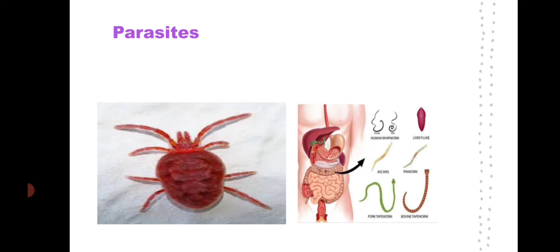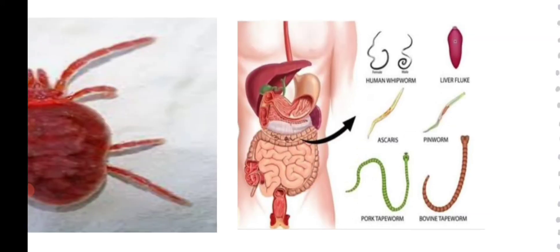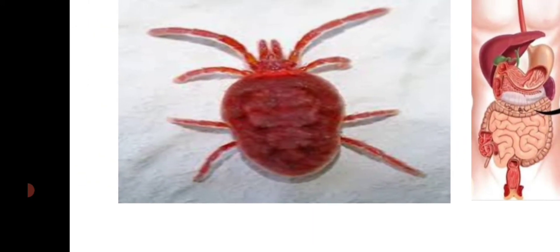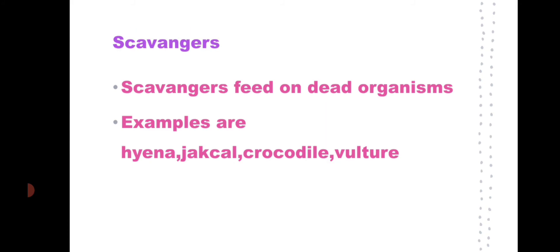In the human body too, many parasites can be found — such as human whipworm, liver fluke, ascaris, pinworm, pork tapeworm, and bovine tapeworm. Pork tapeworm is contracted through eating pork. In order to prevent parasites in our body, we have to do deworming regularly — deworming is necessary for us.